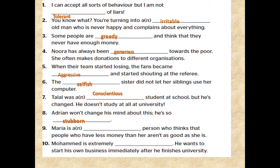9. Maria is a snobbish person who thinks that people who have less money than her aren't as good as she is. 10. Muhammad is extremely anxious. He wants to start his own business immediately after he finishes university.